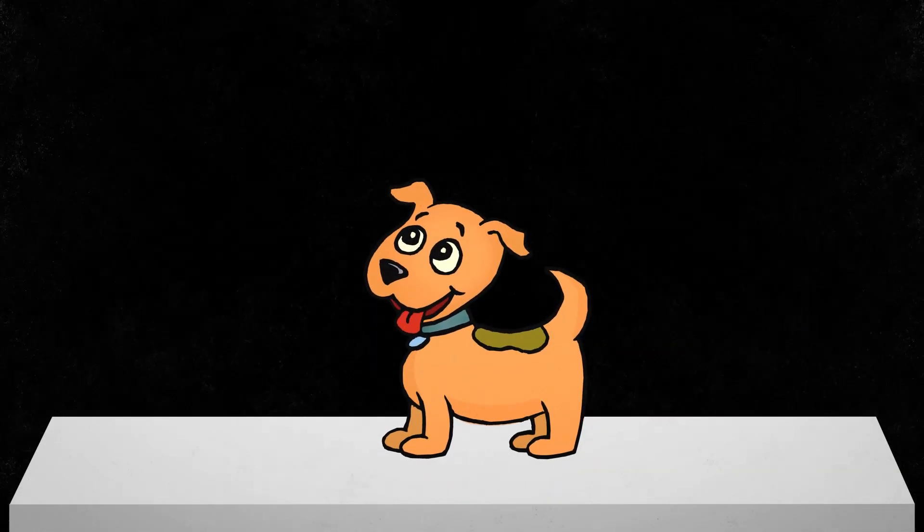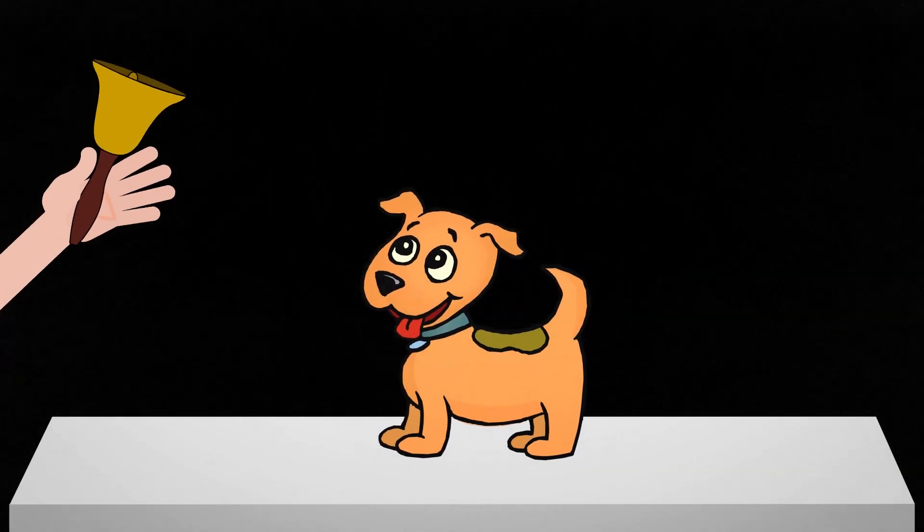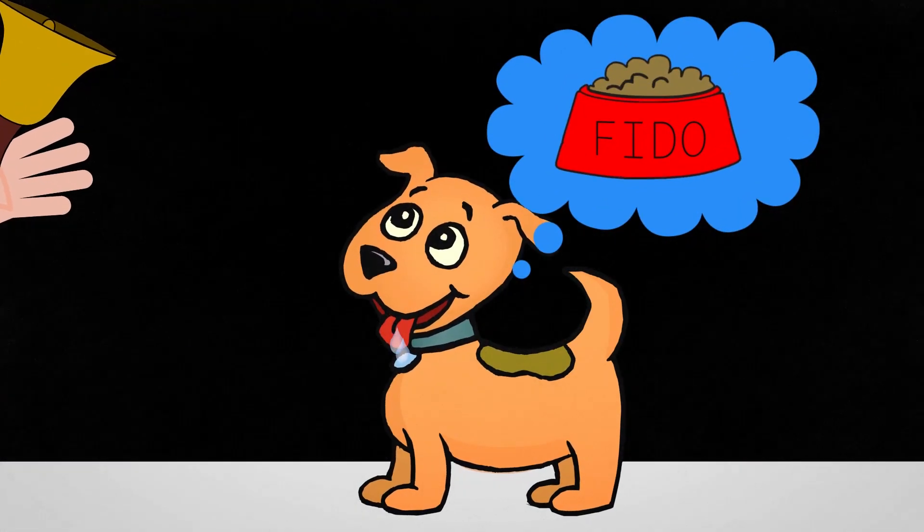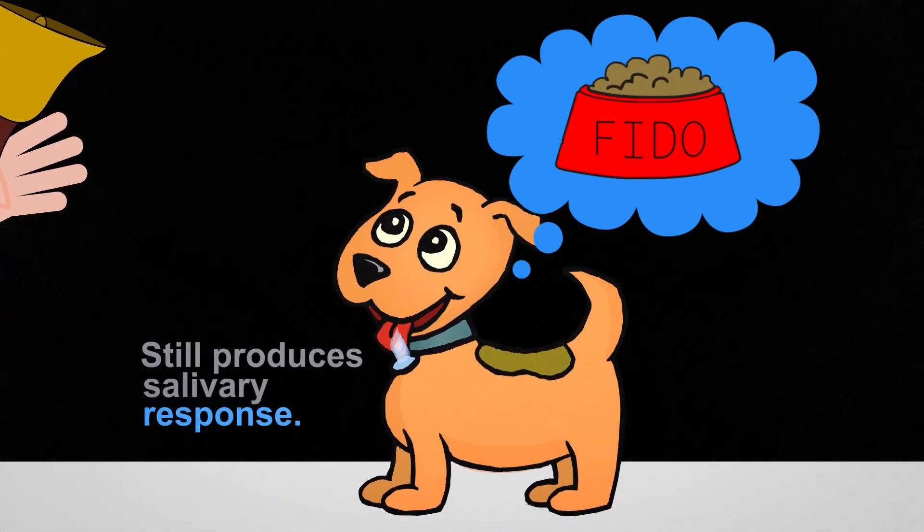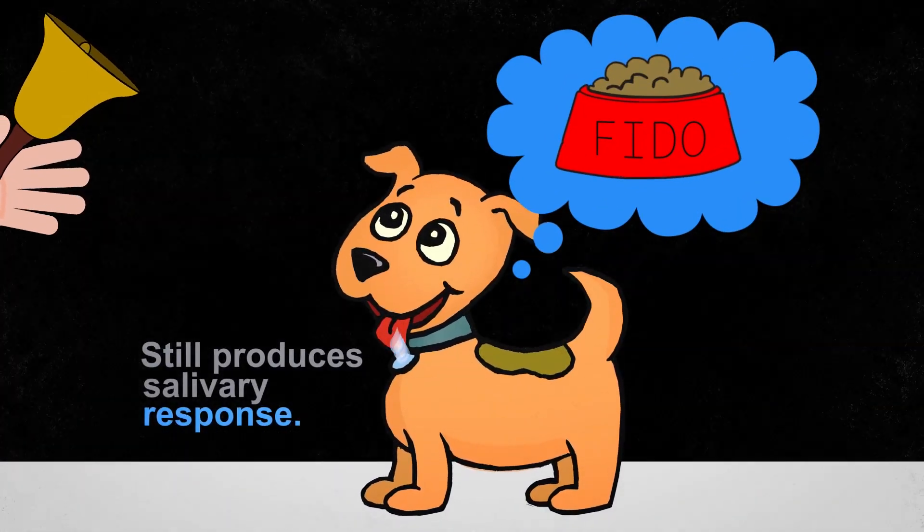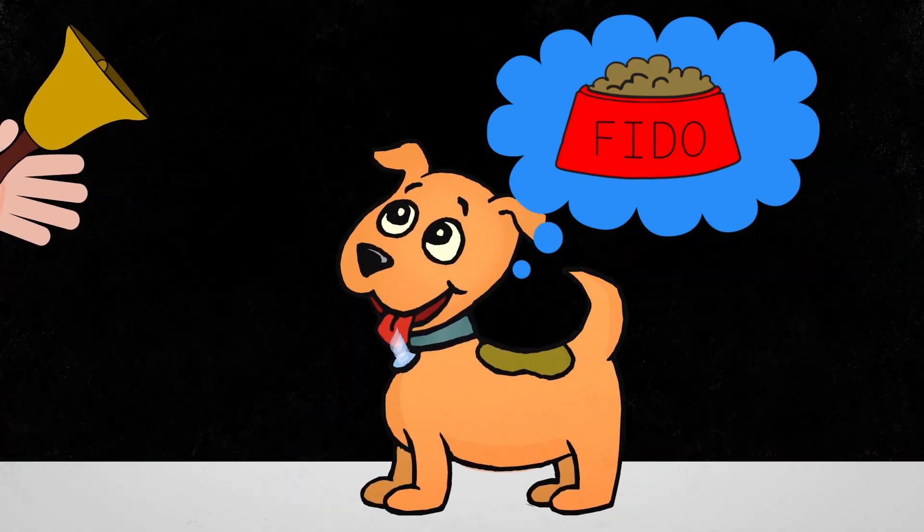In other words, when Pavlov rang the bell and the dog heard that sound, it created the image from the past experience of what was about to take place in the present moment. And the dog's body autonomically, automatically, physiologically, chemically, subconsciously began to change in preparation for the event.